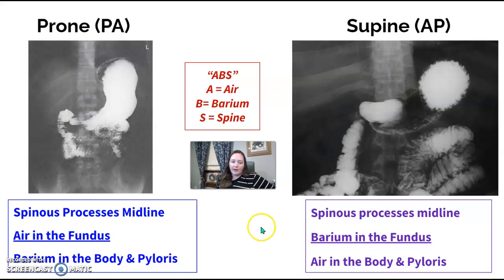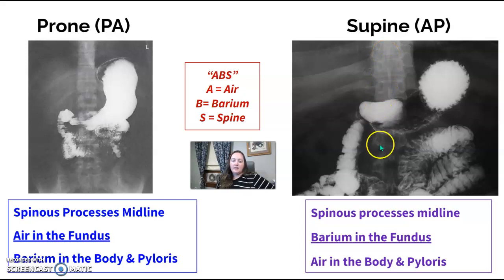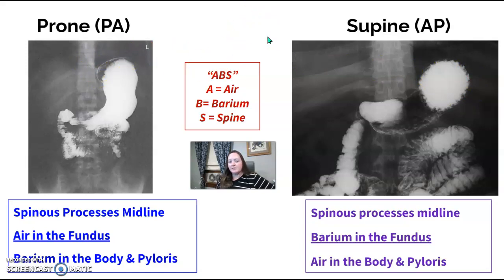When talking about supine or AP stomach positioning, look for what has air, what has barium, and how does the spine look — I call this ABS. When the spine has spinous processes coming straight down the middle, the patient is either supine or prone, because the spine is a true AP. Then evaluate whether the fundus has barium or air.